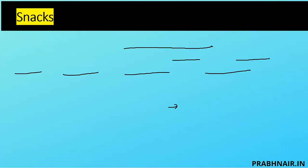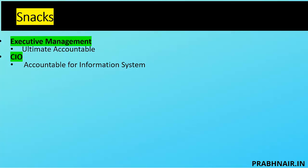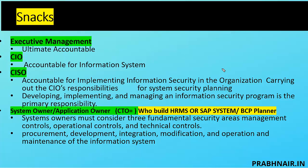Now for the snacks section. When talking about executive management, they are ultimately accountable for security in the organization. Executive management appoints the CIO, who is accountable for the information system — including information security, IT, and everything. Then we have the CISO.